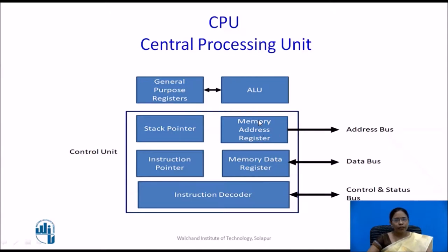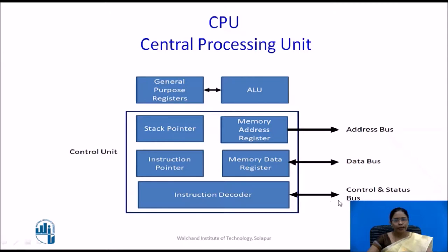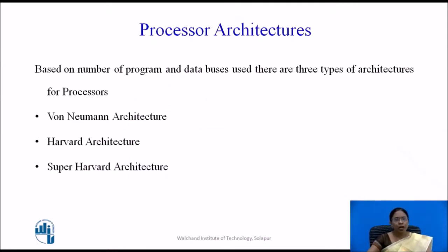From the memory address register, the address bus goes out — the address bus is unidirectional. From the memory data register, data can be taken in or sent out, so the data bus is bidirectional. The bus from the instruction decoder is the control and status bus.